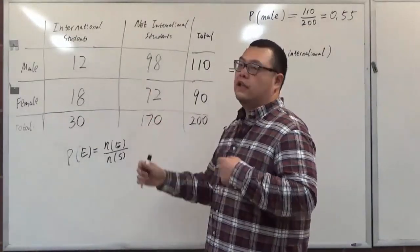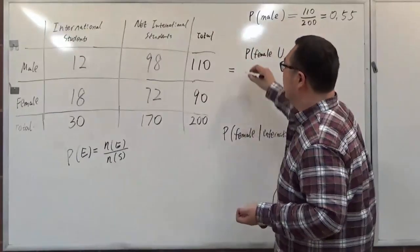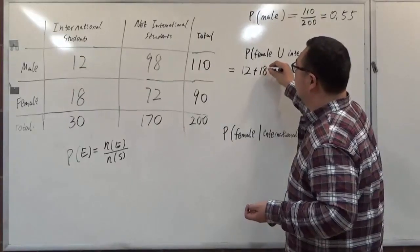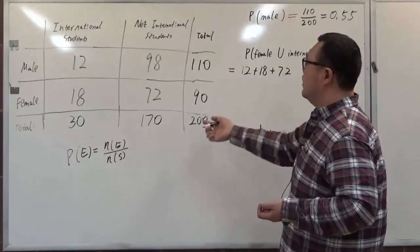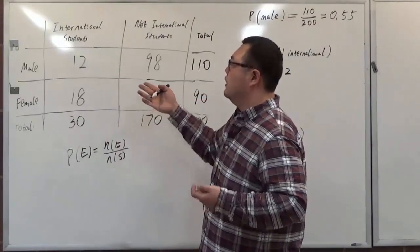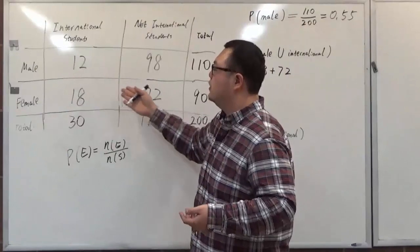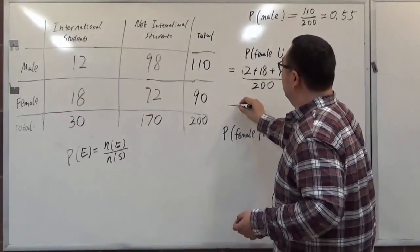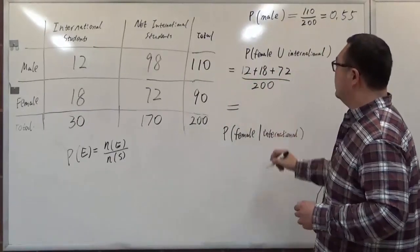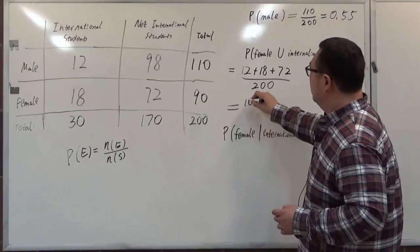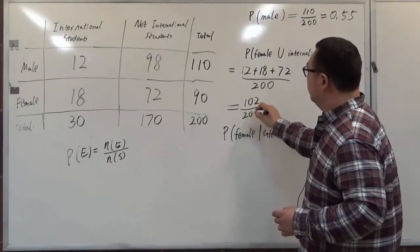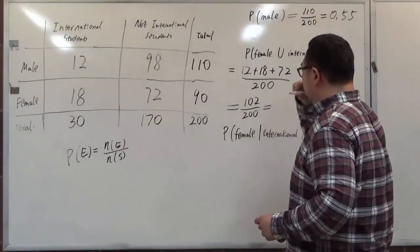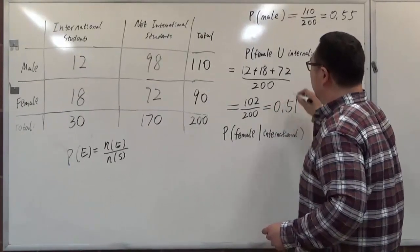We can simply add the categories together intuitively. We have 12 male international, 18 female international, and 72 female non-international. Those three together satisfy all the characters of international students or female students. Then we divide that by 200. We get 102 divided by 200, which equals 0.51.